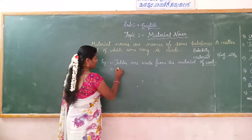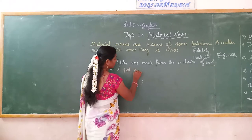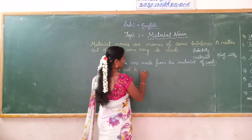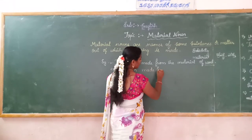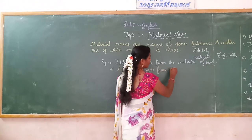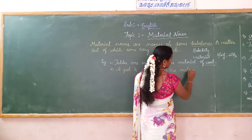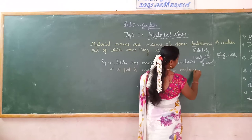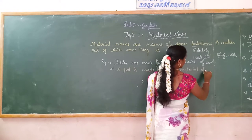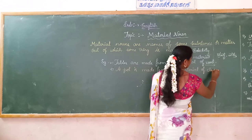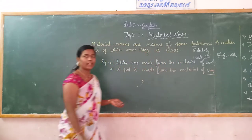A pot is made from the material of clay. Clay is the material noun.